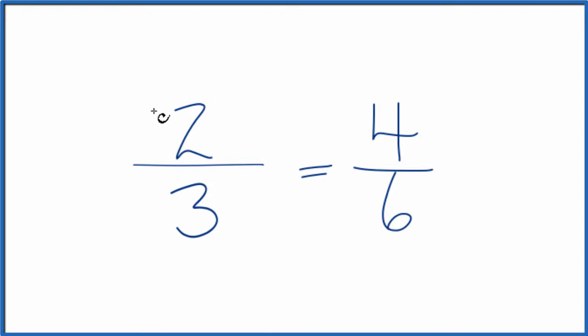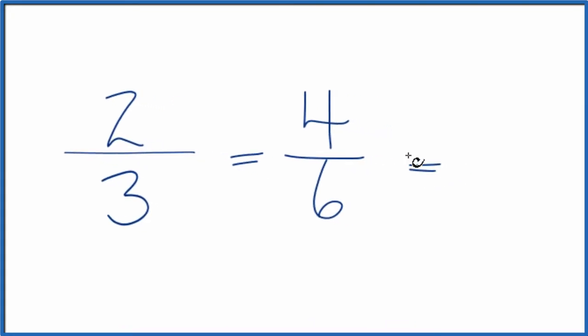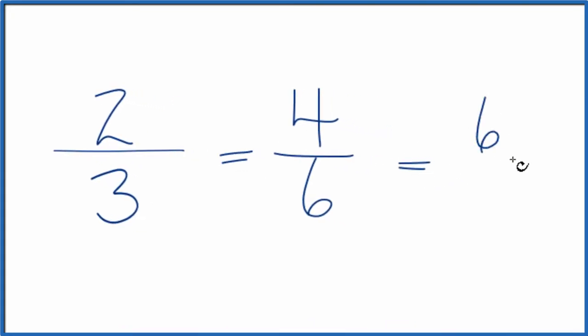Let's multiply the numerator and denominator times 3. 2 times 3 is 6. 3 times 3 is 9. So that's another equivalent ratio to two-thirds.